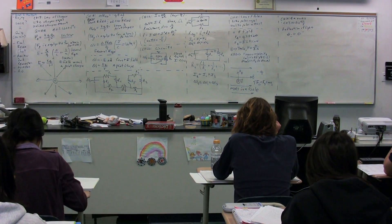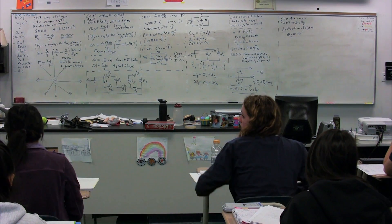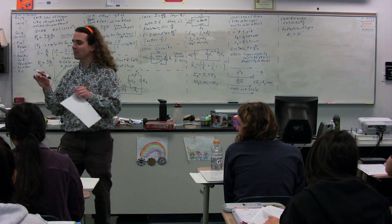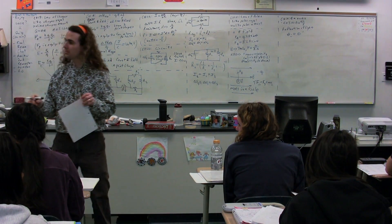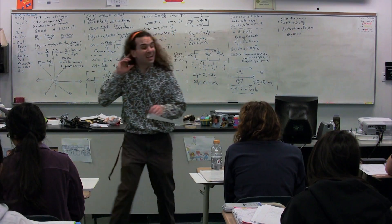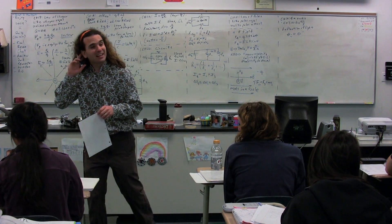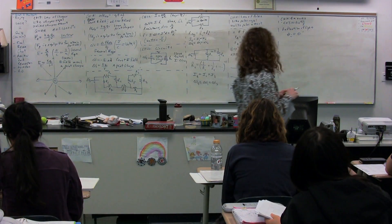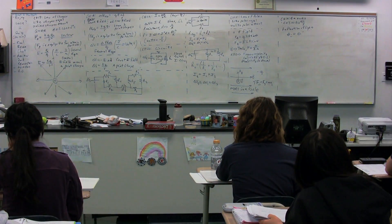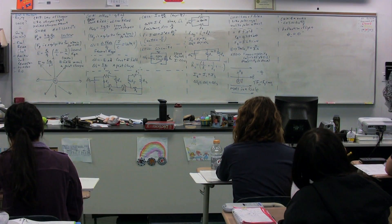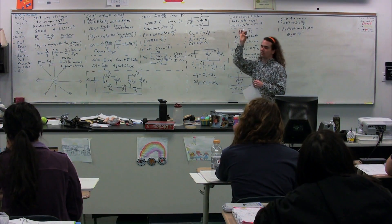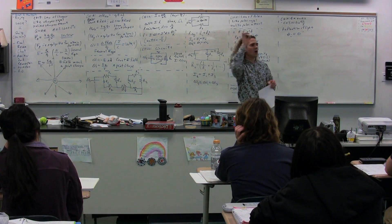Theta i is the incident angle. What is theta prime? The reflected angle. Right — the reflected angle. And remember that those are the same. All of these angles — the incident angle, the reflected angle, the refracted angle, the critical angle...